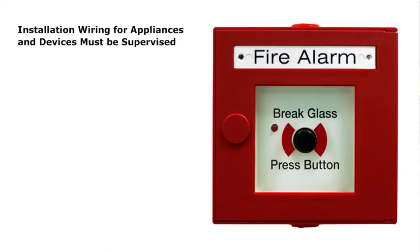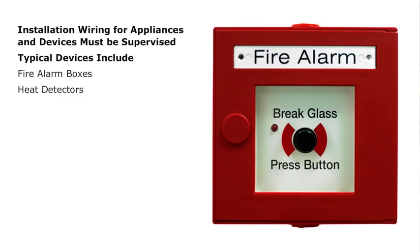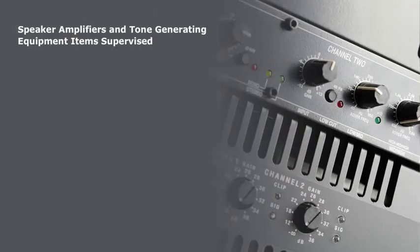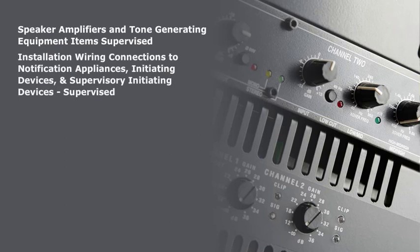Installation wiring for appliances and devices that initiate and transmit signals must be supervised. This applies to devices that are manual and automatic. Typical devices include fire alarm boxes, heat detectors, smoke detectors, and automatically operated transmitters. All installation wiring for operating audible and visual alarm notification circuits are electrically supervised. Speaker amplifiers and tone-generating equipment items are supervised. Installation wiring connections to alarm notification appliances, initiating devices, and supervisory initiating devices are supervised.